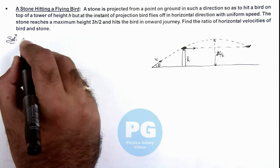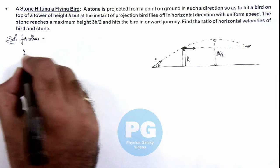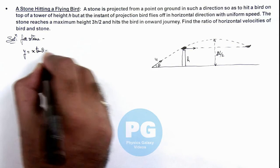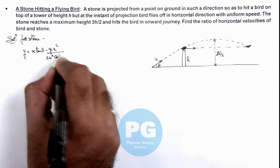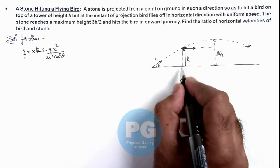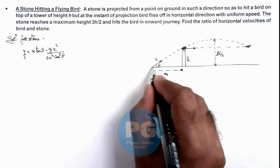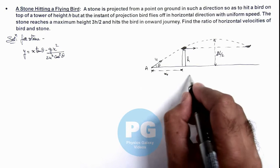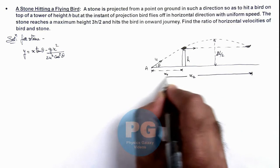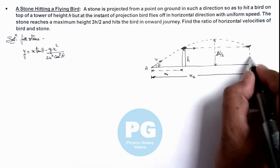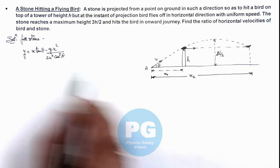For the stone we can use the equation of trajectory: y = x tan(theta) - gx²/(2u²cos²(theta)). We can see if this tower is at a distance x₁ from the projection point (say this point is A), and another point where the stone is hitting the bird is located at a distance x₂, then in this situation we can say both x₁, x₂, and h will satisfy this equation.